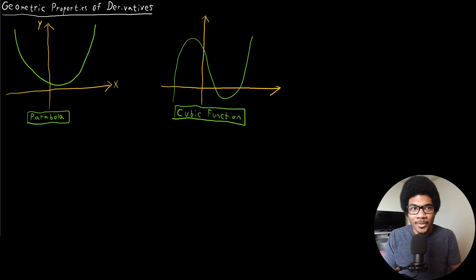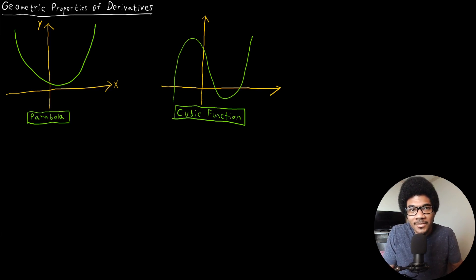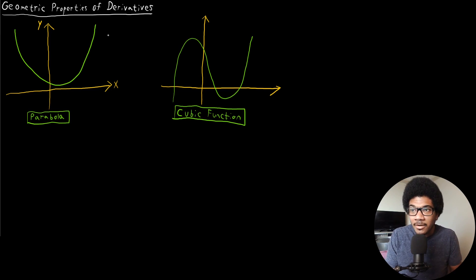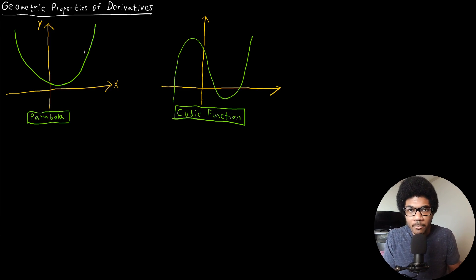Derivatives aren't just notational things that you can do to functions where you get some expression out of — they're representative of visual graphs and plots. There are geometric properties of derivatives that become important: being able to tell whether a function is increasing or decreasing, whether it has a maximum or minimum. That's what we mean when we talk about the geometric properties of a derivative.